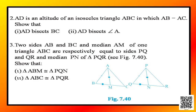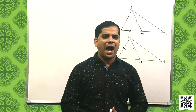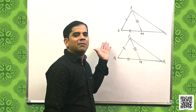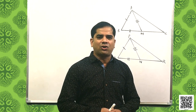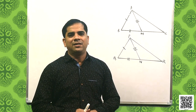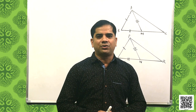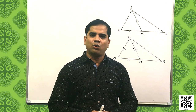Let us now discuss question number 3. It says two sides AB and BC and median AM of triangle ABC are respectively equal to sides PQ and QR and median PN of triangle PQR. We have to show that triangle ABM is congruent to triangle PQN and triangle ABC is congruent to triangle PQR.